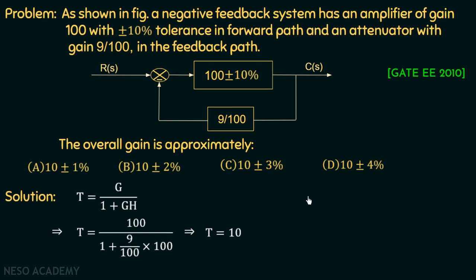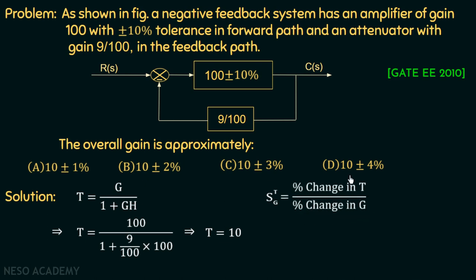All options have the overall transfer function equal to 10, so now we need to find the overall tolerance. We use the sensitivity of overall transfer function with respect to forward path gain: S = (percentage change in T) / (percentage change in G) = 1 / (1 + GH). Substituting G = 100 and H = 9/100, the 100s cancel and the sensitivity equals 1/10.